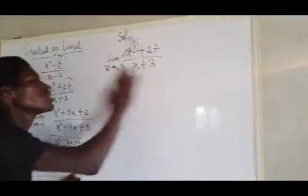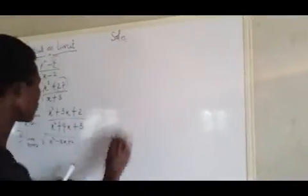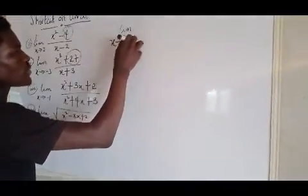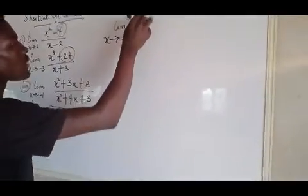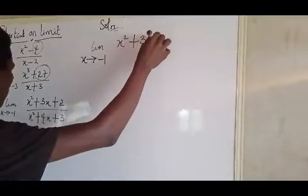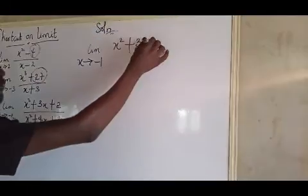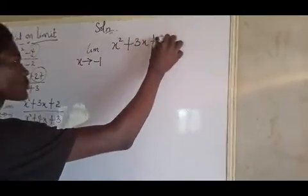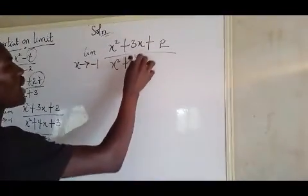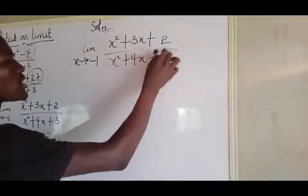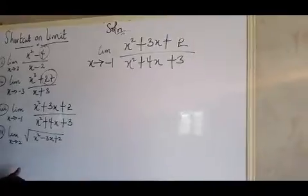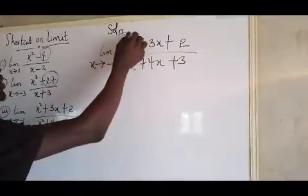Alright. So, to the next question we have here. We have the limit as x approaches minus 1 of x squared plus 3x plus 2 all over x squared plus 4x plus 3. Do we get that now? So this one, the way to solve it is still the same thing. So let's differentiate.